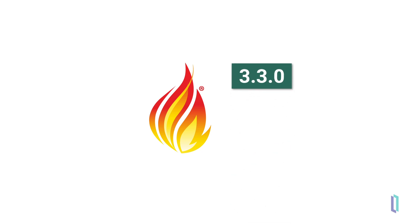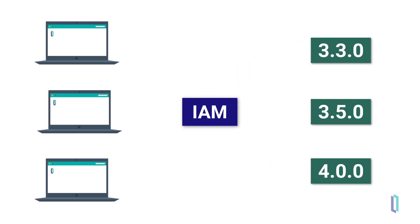Consider the case where you have three different versions of FHIR API exposed: 3.3, 3.5, and 4.0. Without monitoring your traffic, you may not know who's using which API. By using IAM to monitor this, you may realize that you can take an API offline that isn't being used, or make adjustments to handle a particularly high volume of traffic on another.